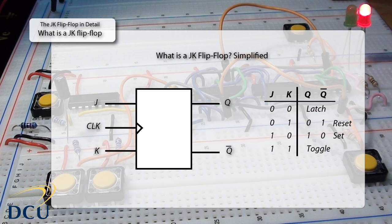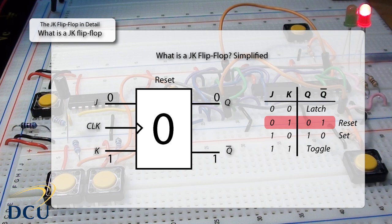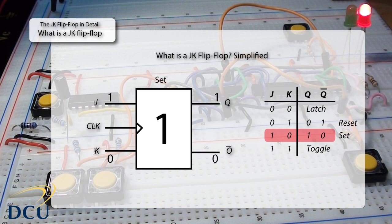Let's start the flip-flop in reset form — this means it stores a zero, which is the Q output. To place it in reset, we apply J=0, K=1 with a clock pulse. If we then set J=0 and K=0, the JK flip-flop goes into its latch state, simply storing the last value — zero — for as long as J and K remain zero. For the set condition, we apply J=1, K=0, causing the flip-flop to store a one. Going back to latch state then remembers that one forever while J and K remain zero.